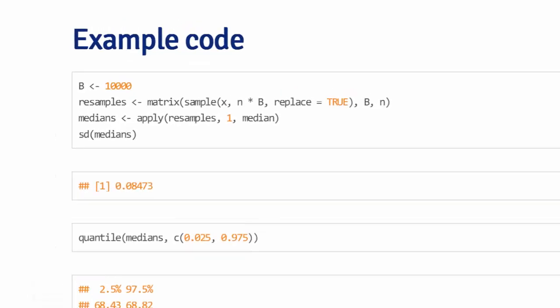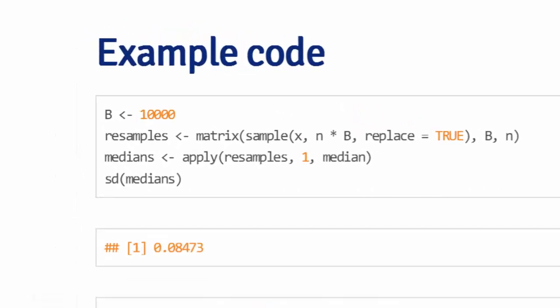Let's go through some quick example code. Remember the father-son data, where our x is our son's heights. I'm going to define b to be 10,000. That's going to be my number of Bootstrap resamples. And I have already previously defined n as the length of x, the number of observations that I have.